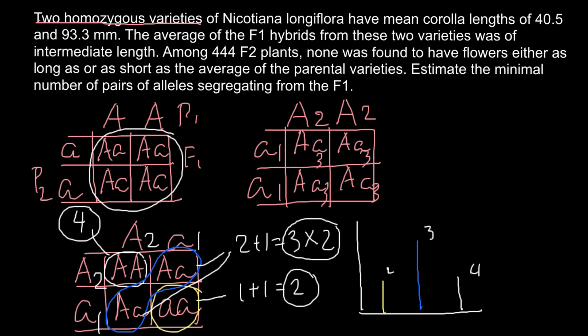When we have more than one allelic pair, the segregation is on a much larger scale. Instead of a 2×2 Punnett square giving 4 cells, two allelic pairs produce a 4×4 square with 16 genotypes. Some genotypes can be the same, some different, but the extreme genotypes appear at the edges. We can represent the frequency of extreme phenotypes with a formula.